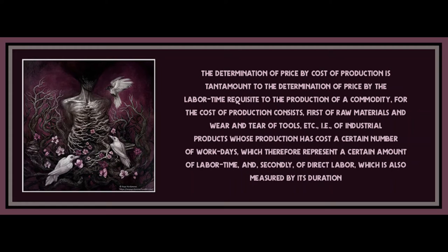If the price of a commodity rises considerably owing to a failing supply or disproportionately growing demand, then the price of some other commodity must have fallen in proportion. For, of course, the price of a commodity only expresses in money the proportion in which other commodities will be given in exchange for it. If, for example, the price of a yard of silk rises from two to three shillings, the price of silver has fallen in relation to the silk. What will be the consequence of a rise in the price of a particular commodity? A mass of capital will be thrown into the prosperous branch of industry, and this immigration of capital into the provinces of the favoured industry will continue until it yields no more than the customary profits, or rather, until the price of its products, owing to overproduction, sinks below the cost of production.